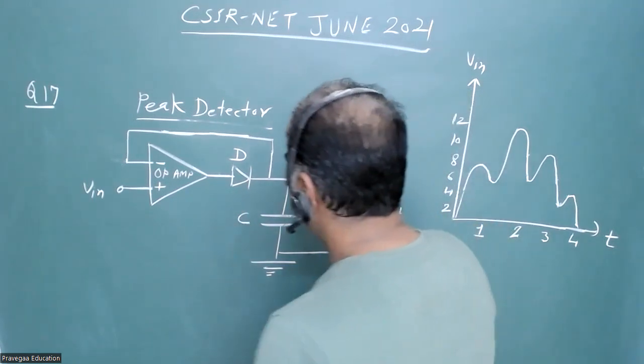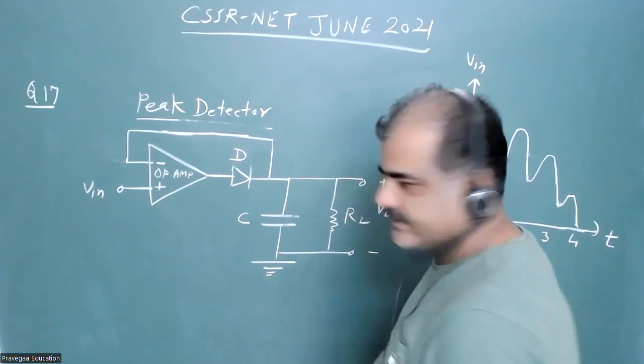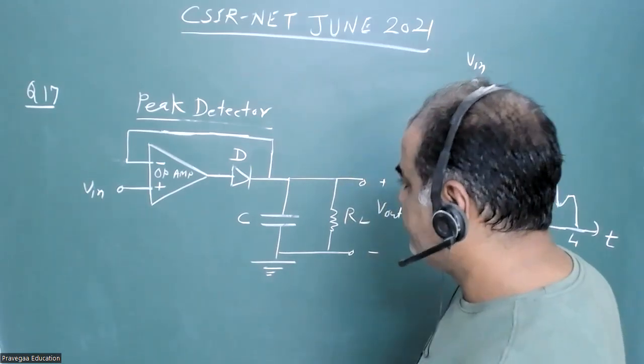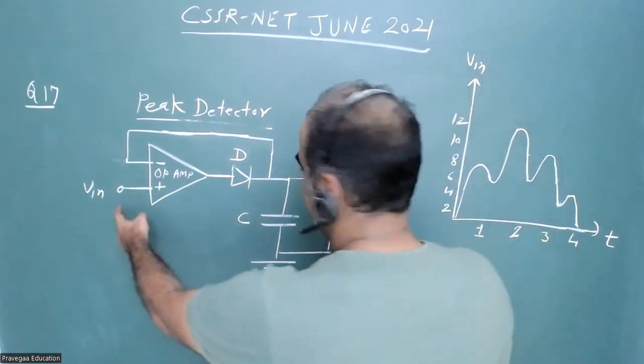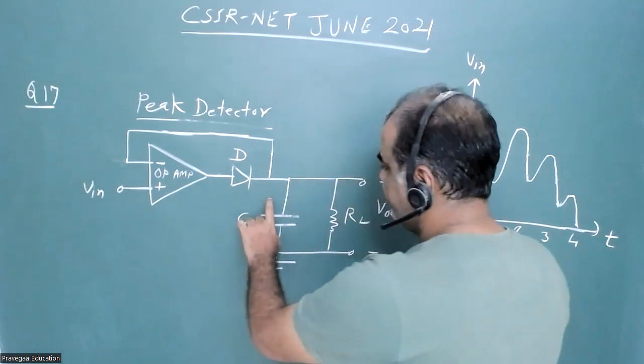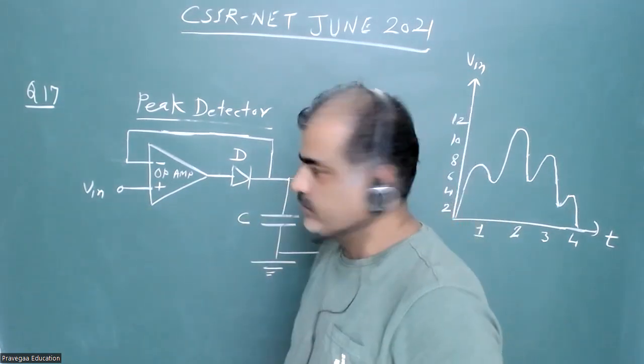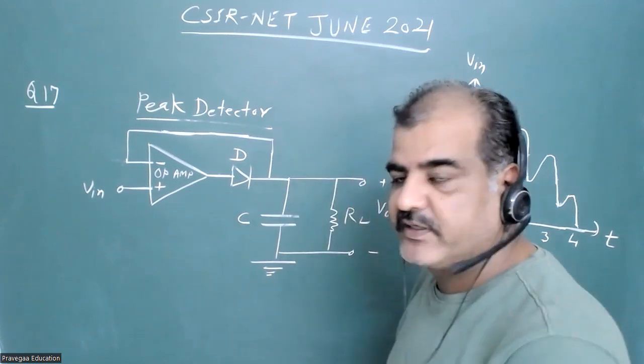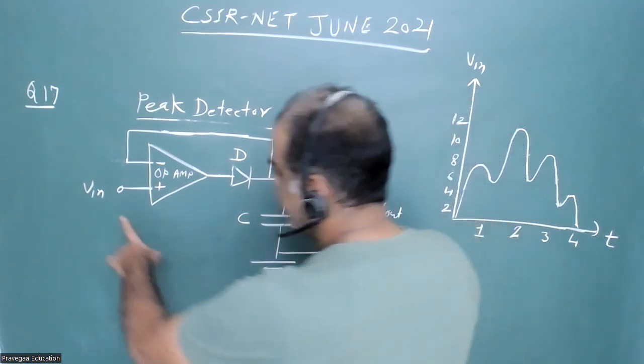If you look carefully, this circuit is basically a peak detector circuit. What does a peak detector do? When you apply input, this capacitor will store only the peak value of input. Let us understand the working of this circuit.